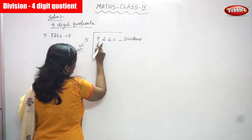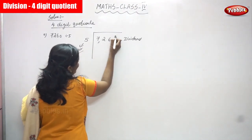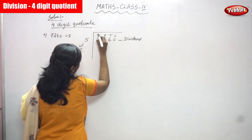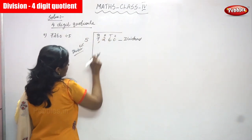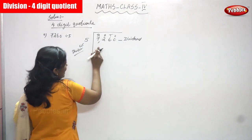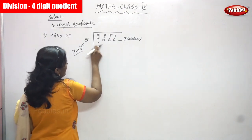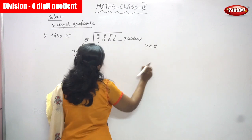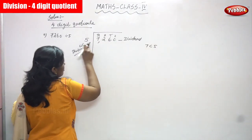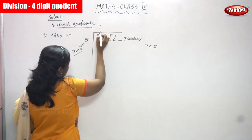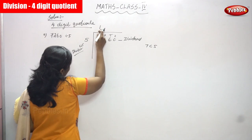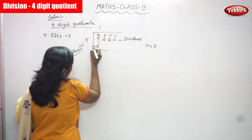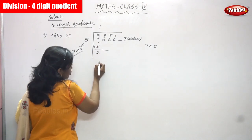First, we take this digit: ones, tens, hundreds, and thousands. We are going to start with the thousands place value. So first, you start with seven. Compare five and seven — seven is greater than five. So seven is divided by five. One five is five. You write five here. Then subtract: seven minus five, you get two.